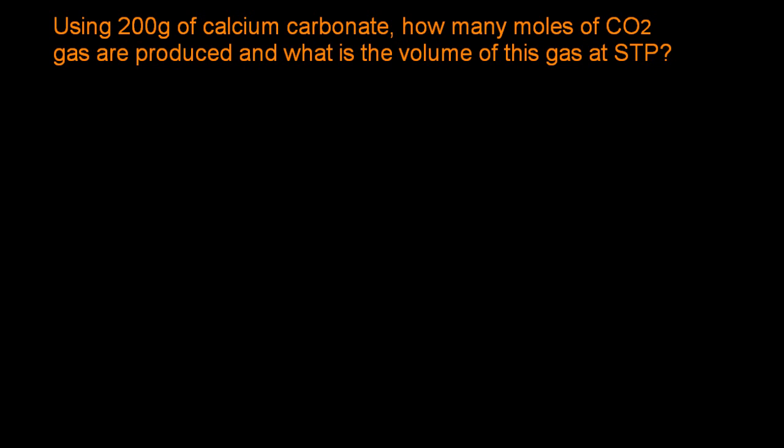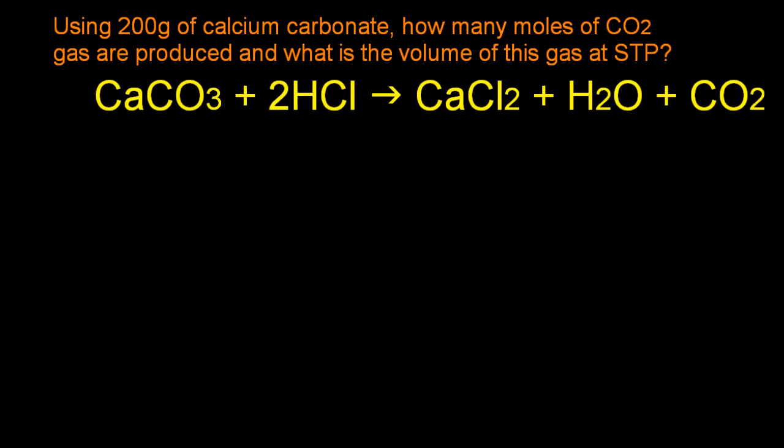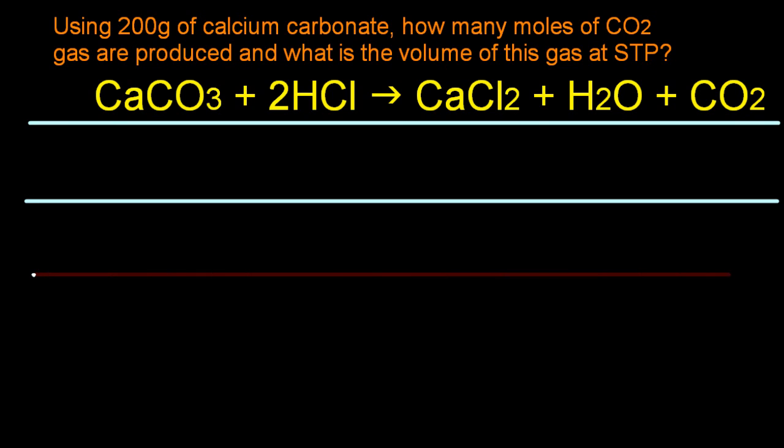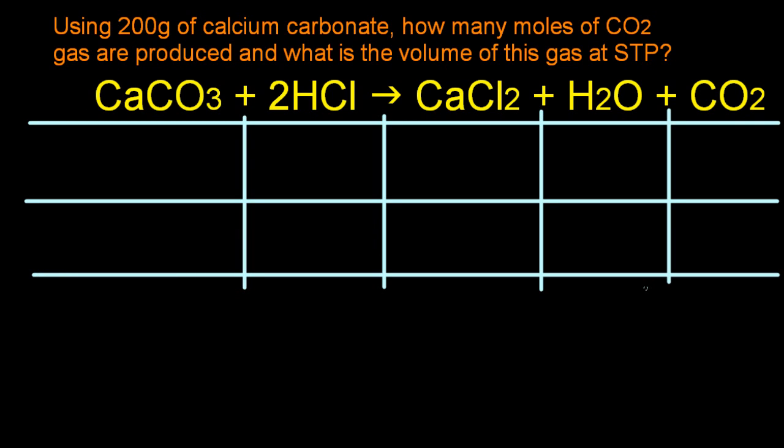So using 200 grams of calcium carbonate and this equation, let's look at the carbon dioxide, how many moles of gas are produced and what's the volume of the gas at STP. Well, I like to draw out this little grid. Maybe you're doing the factor label method and good luck to you. I hate that.